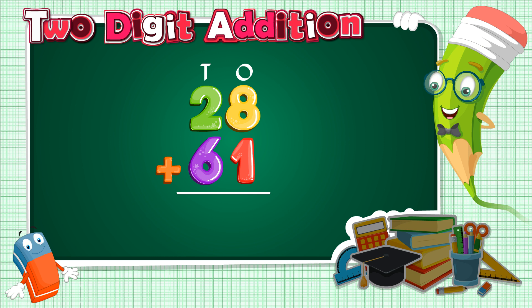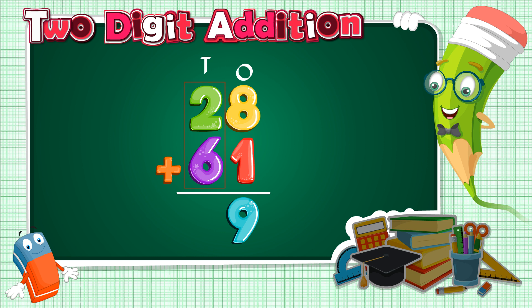When we add or subtract any 2 or more digit numbers, we always start from the right side, meaning we start with the 1's column. So, 8 plus 1 is equal to 9. Write 9 under the 1's place. Now we will add the numbers in the 10's place. 2 plus 6 is equal to 8. Write 8 under the 10's place. Therefore, 28 plus 61 is equal to 89.